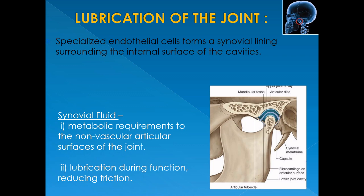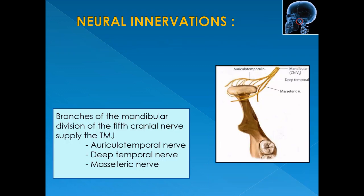Most of the neural innervation of the TMJ is provided by the auriculotemporal nerve, with additional innervation from the deep temporal and masseteric nerves. All these are branches of the mandibular division of the fifth cranial nerve — the trigeminal nerve.